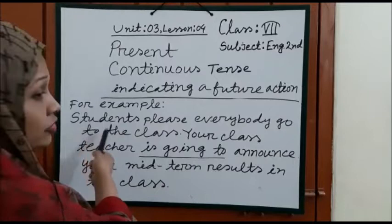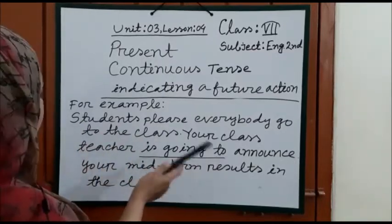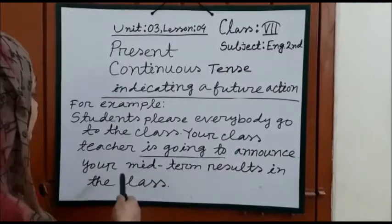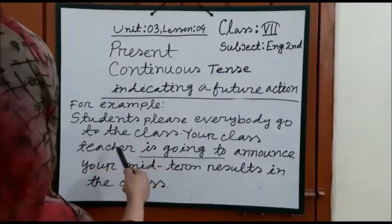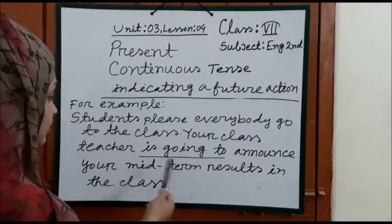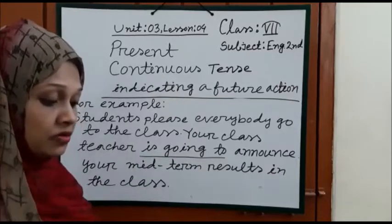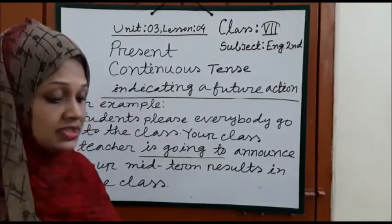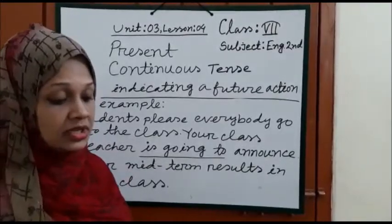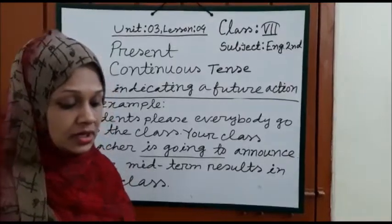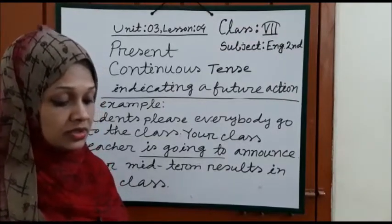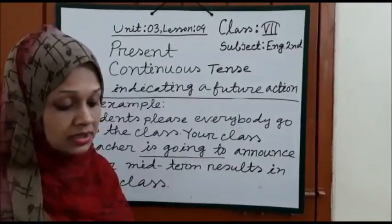For example: Your class teacher is going to announce your mid-term results in the class — 'is going to' is used because it refers to the near future. Sometimes you may confuse am/is/are + going to with simple future using 'will'. The modal 'will' is best used when you are in the process of making a decision about the future. Most often we use 'will' to talk about the future generally. For example: Who will open the door if I am late?